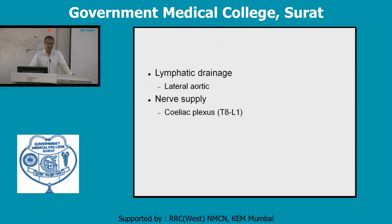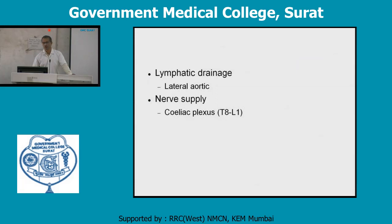Nerve supply comes from the celiac plexus from T8 to L1 segments. From the sympathetic chain, the celiac plexus supplies mainly the medulla of the suprarenal gland and is responsible for sympathetic responses.